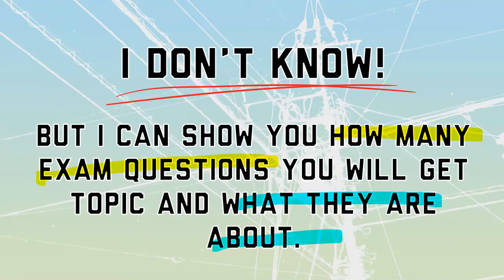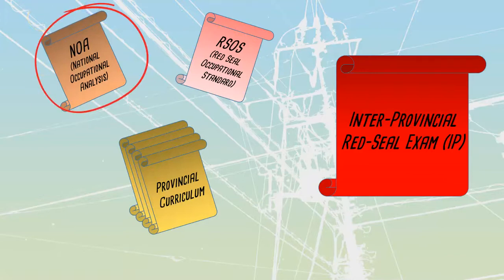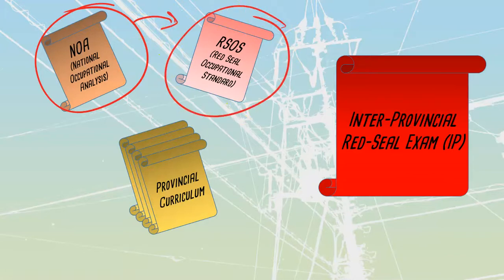Before we get into any of that, let me spend a couple of quick seconds explaining where the IP even comes from. First, we've got a couple of documents you should be familiar with. One is the NOA, the National Occupational Analysis — basically a review of what an electrician is, does, and should know in Canada. From the NOA, another document is developed: the RSOS, the Red Seal Occupational Standard. That says if an electrician should be able to work on three-phase transformers, then this is what we need to train them about — what is a Y transformer, what is a Delta transformer, etc. It's made by the Red Seal Standards Association.